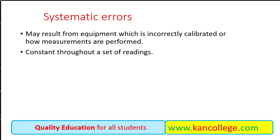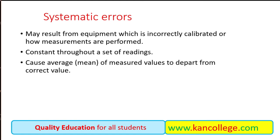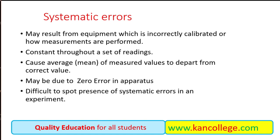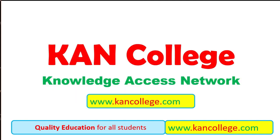These errors are constant throughout a set of readings and cause the average mean of the measured values to depart from the correct values. These errors may be due to zero errors in the operators, and it is very difficult to spot the presence of systematic error in the experiment.